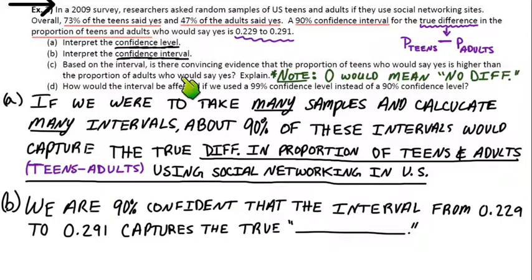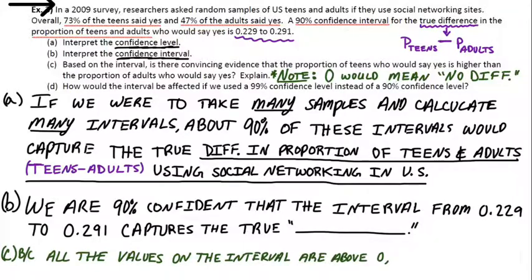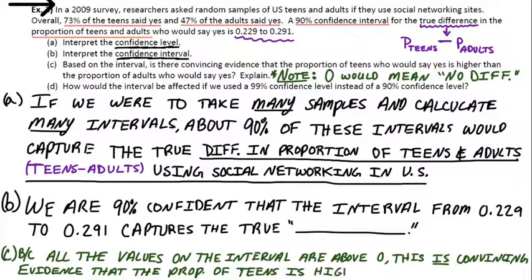When you answer a question like this, does this prove that teens are actually higher or that there actually is a difference? Well, the fact that zero isn't on the interval at all would suggest, yeah, there definitely is a difference. Like, in this case, the teens are higher. So, because all the values on the interval are above zero, this is convincing evidence that the proportion of teens is higher than the proportion of adults. So another really common question you'll see in this class, does this interval provide convincing evidence? And a lot of times, it's just going to say, is there a difference, yes or no? And you should look for whether or not zero is on the interval.